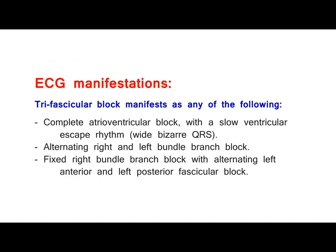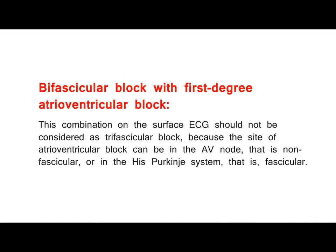ECG manifestations: trifascicular block manifests as any of the following — complete atrioventricular block with a slow ventricular escape rhythm and wide bizarre QRS; alternating right and left bundle branch block; or fixed right bundle branch block with alternating left anterior and left posterior fascicular block.